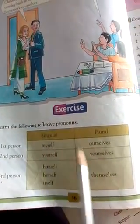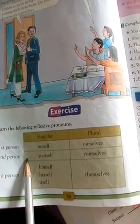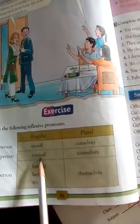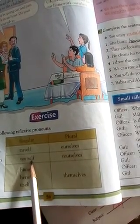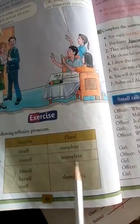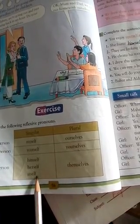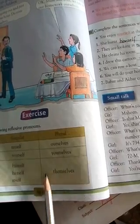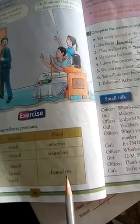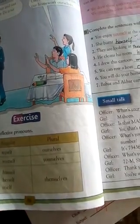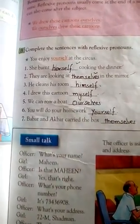Chart کے مطابق: First person — 'I' converts to 'myself' اور plural 'we' converts to 'ourselves'۔ Second person — 'you' singular converts to 'yourself' اور plural converts to 'yourselves'۔ Third person — 'he' converts to 'himself,' 'she' to 'herself,' 'it' to 'itself,' اور 'they' converts to 'themselves'۔ جب plural form ہو تو 'f' remove ہو کر 'ves' آ جاتا ہے — جیسے 'themselves' اور 'ourselves'۔